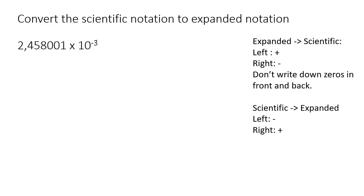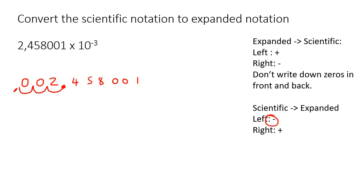Here's the next one — this is a negative exponent, so negative means we go to the left. Write out the number 2,458,001. Negative means left — go 1, 2, 3 places. Put the comma. Fill any empty spaces with zeros, and put a zero in front of the comma. That is your final answer.